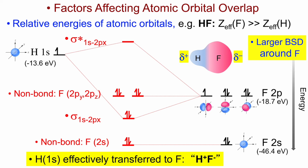In this case, the electron transferred to fluorine is not spending all of its time on fluorine — there is some probability of it being around the hydrogen. So really it's not H⁺ F⁻; it's H^δ+ F^δ−, though the value of delta could be approaching 1.